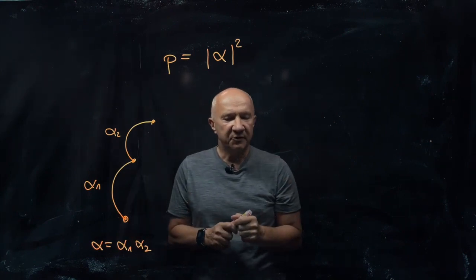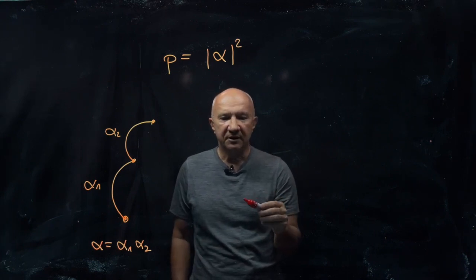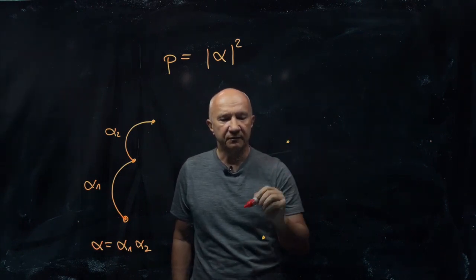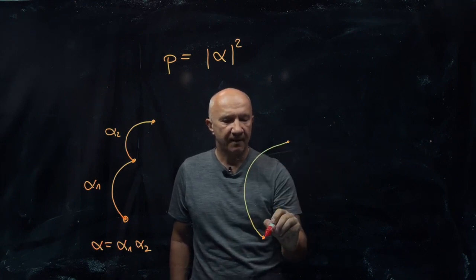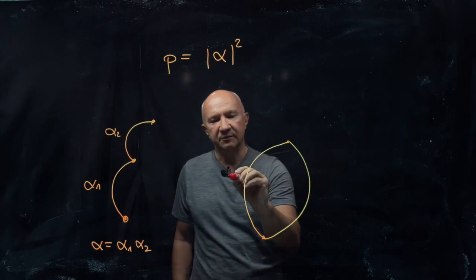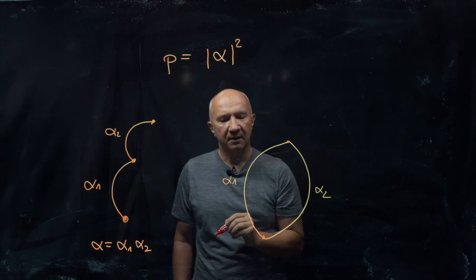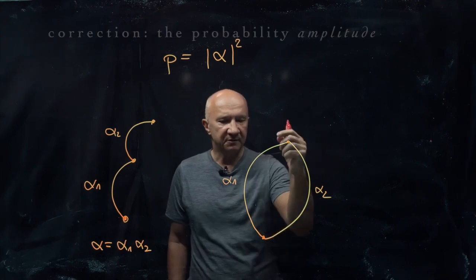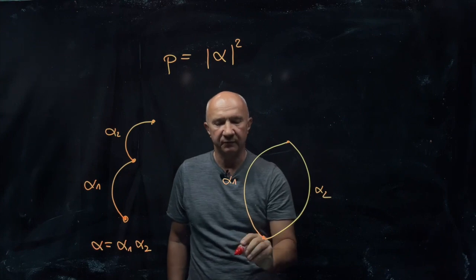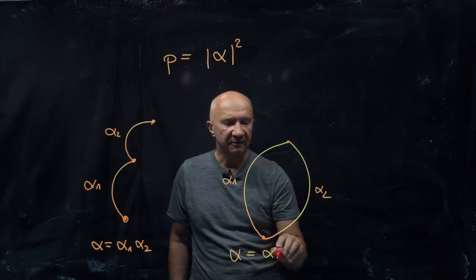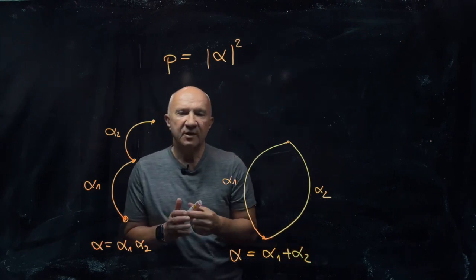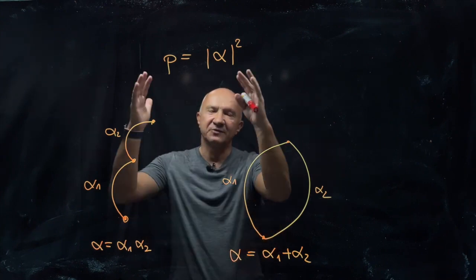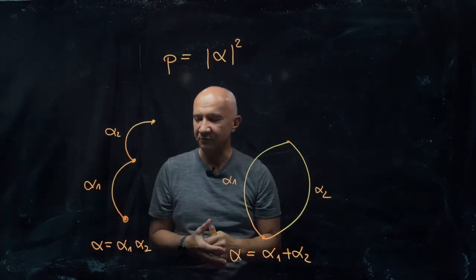And the third rule — probably the most interesting one — is that if something can happen in a mutually exclusive way, so if there are two alternatives for the system to go from one configuration to another, and if you associate probability amplitudes again, alpha one and alpha two, then the probability for this system to evolve from this configuration to this configuration is the sum of the two. So alpha in this case is equal to alpha one plus alpha two. So essentially the whole of quantum physics — well, of course I'm simplifying a little bit — but pretty much the whole of quantum physics can be summarized by stating these three rules.